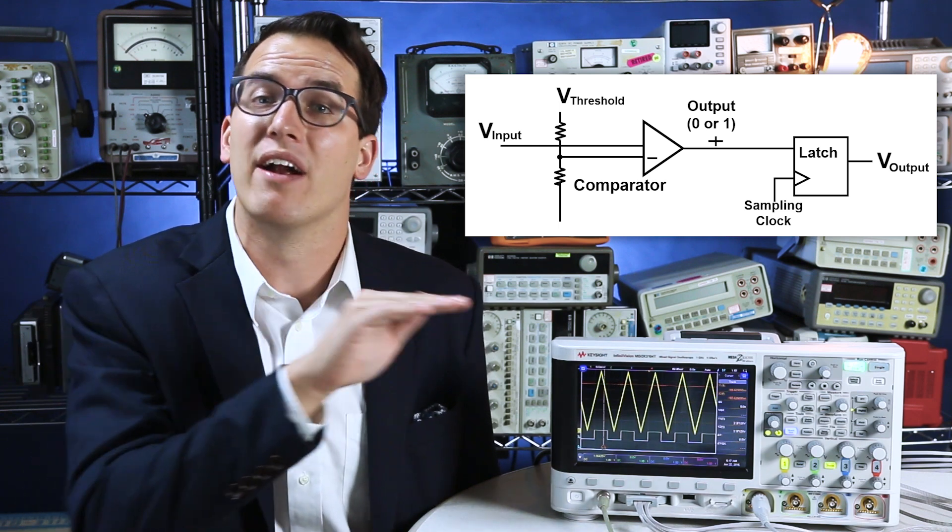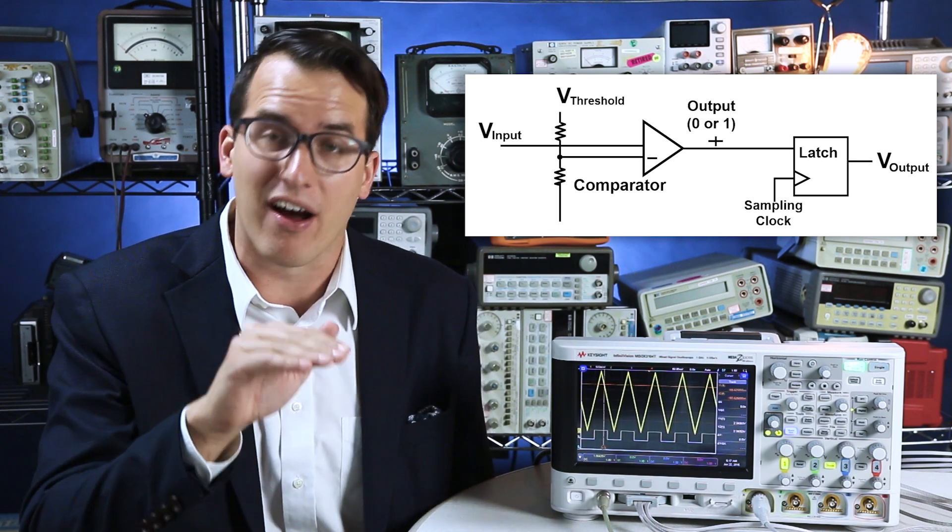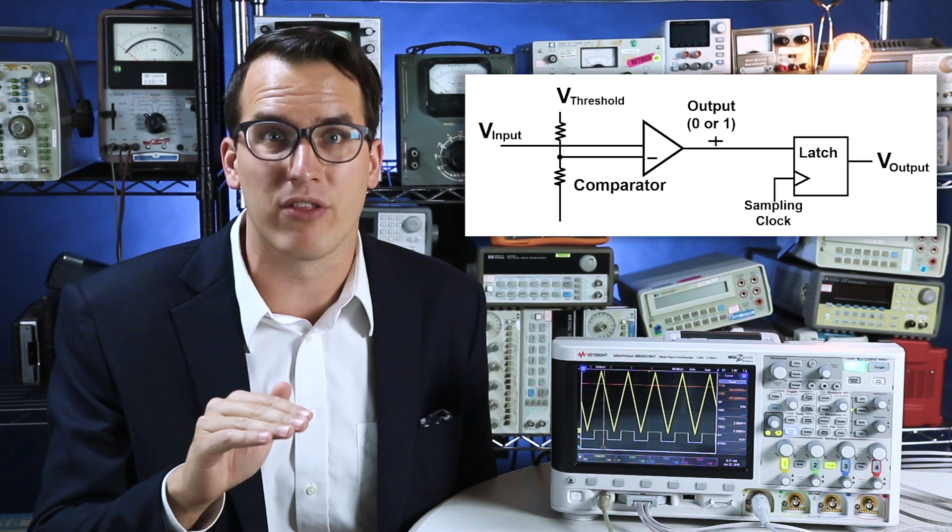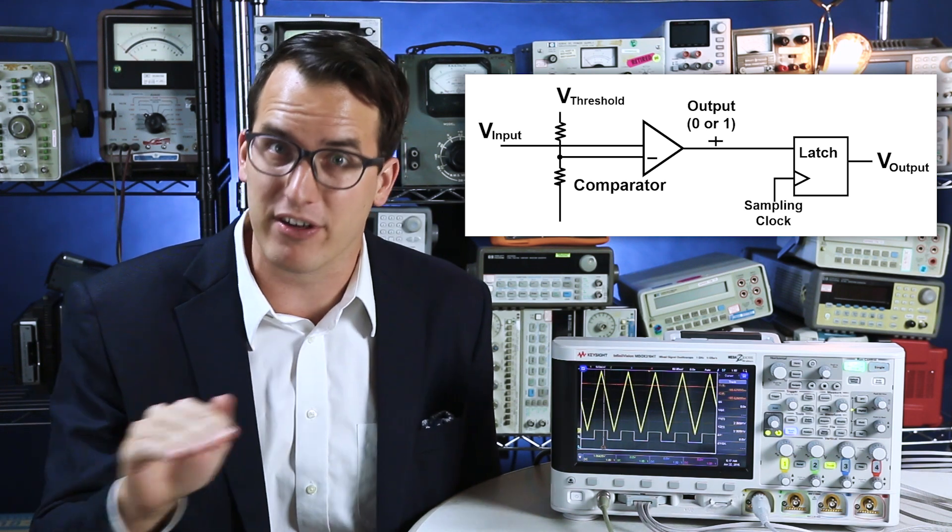a threshold value, and a line in. If that line in is higher than the threshold value, it's going to be a one. If the line in is lower than the threshold value, the output of the comparator is going to be a zero.